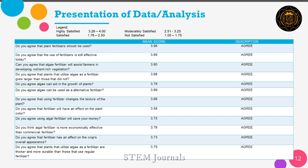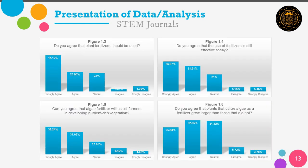For question number one, 44.12% of the 238 selected respondents strongly agree that plant fertilizer should be used, while 6.30% strongly disagree. For question number two, the majority of respondents strongly agree that the use of fertilizer is still effective today, while 5.46% strongly disagree. For question number three, 38.24% strongly agree that the algae fertilizer will be useful in developing nutrient-rich vegetation, while 4.32% strongly disagree. For question number four, the majority voted to agree that plants with algae as fertilizer are larger than those that did not, with 32.35%, while 3.78% strongly disagree.